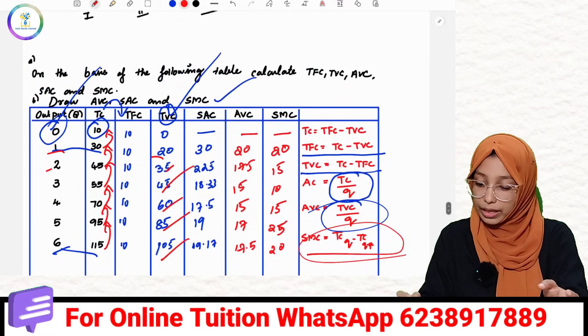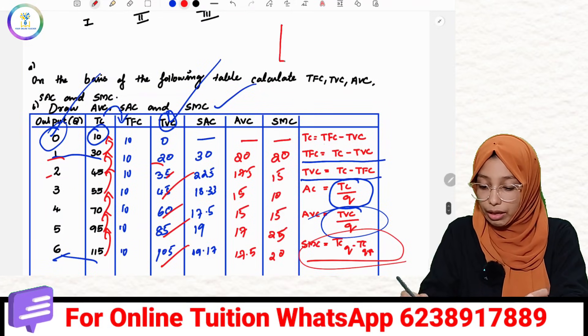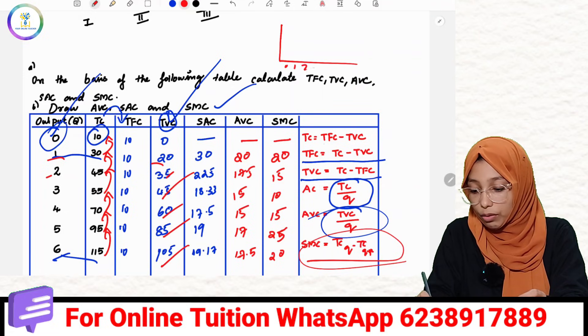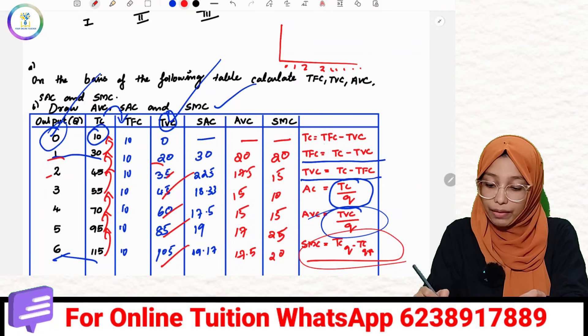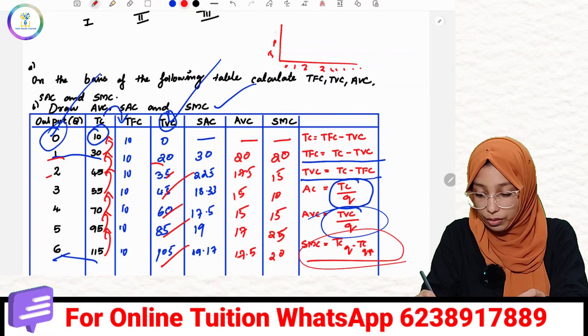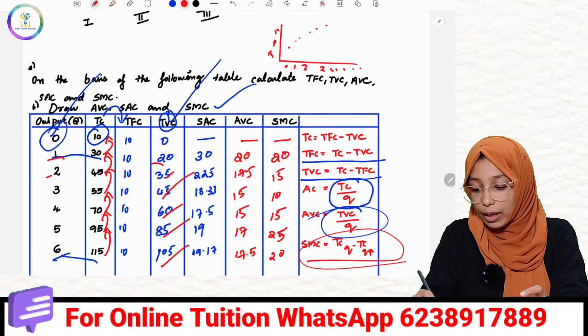Now we have a graph here. We have the output 1, 2, 3, 4, 5, 6. Now we have the SAC, AVC, SMC with values at 5, 10, 15. This is the graph.